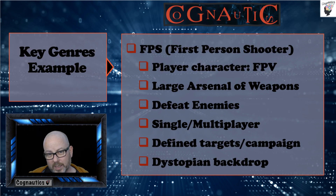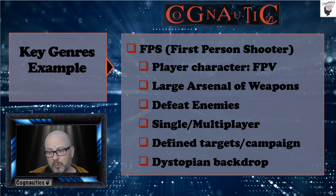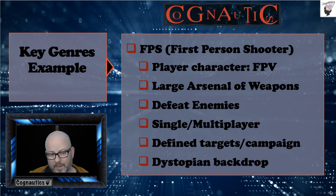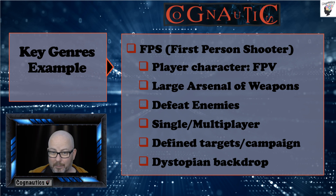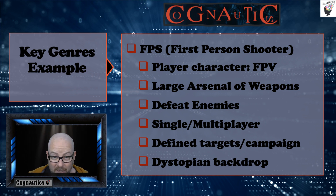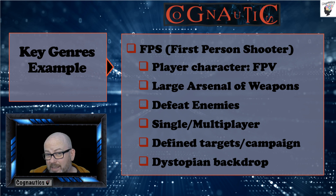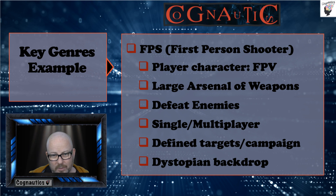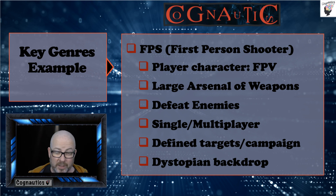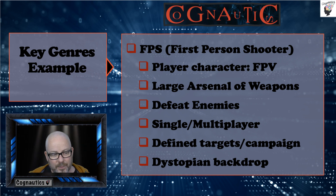Let's pick one genre as an example — first person shooter, such as Halo, Call of Duty, or Medal of Honor. The player is characteristically in first person view, which creates immediacy and excitement. Typically the player has a large arsenal of weapons to defeat the enemy. It can be single or multiplayer, with defined targets and achievements within each level. There's a campaign mode and other modes, and often a dystopian backstory — perhaps set after a cataclysmic event like a nuclear war.